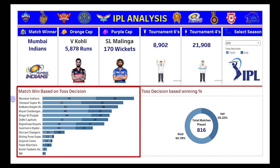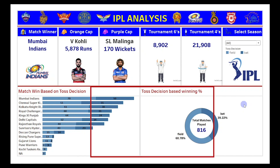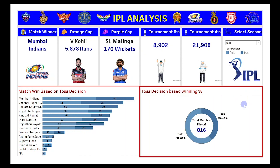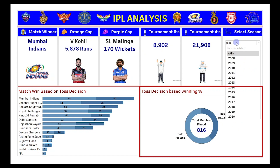Based on the toss decision — whether they chose to field first or bat first — it shows the winning count with respect to that decision. The next chart is a pie chart which gives us the toss decision winning percentage. You can see that by fielding first, 60% of matches have been won, and by batting first, approximately 40% have been won.